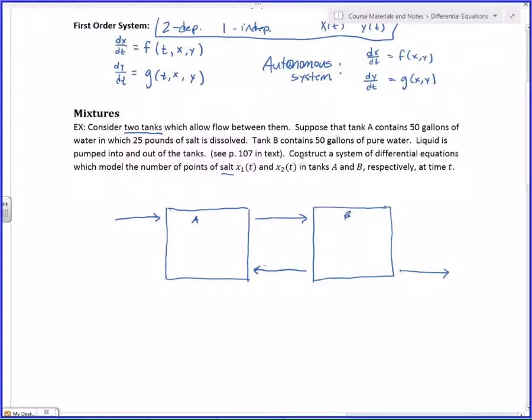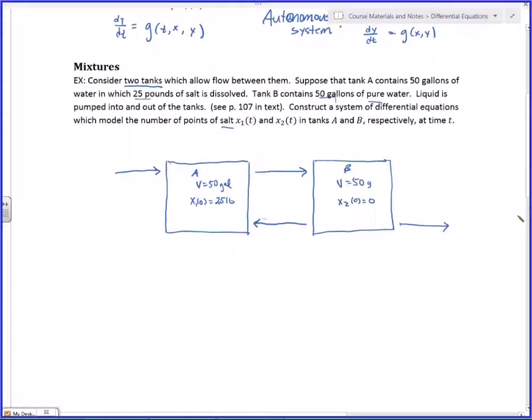Suppose that tank A contains 50 gallons of water, and at time 0, X1 at 0, we have 25 pounds of salt. Tank B also contains 50 gallons, but it starts out at 0 because it's pure water. And I wish I'd given some more information, because I don't have my notes. I don't remember what I was going to do with my variables between here.